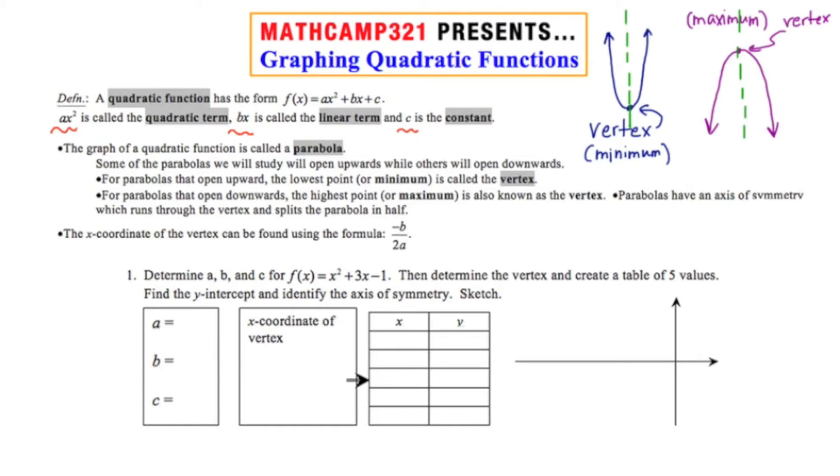and in order to find the vertex, or in order to find the x coordinate of the vertex, we're going to use the formula negative b over 2a. And the b and the a come from our initial function. Let's take a look at an example.